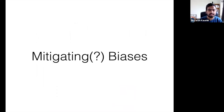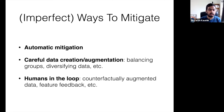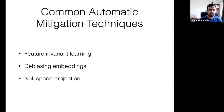In the last part, we discussed how to detect some of these biases. But once you've detected them, can we do something to mitigate them? There are some ways people have looked at this, including automatic mitigation methods, but also data creation and augmentation strategies like balancing demographic groups in the training corpus, or using humans in the loop to counterfactually edit data. All of these methods are imperfect in nature, so proceed with caution. Common automatic techniques include feature invariant learning, debiasing embeddings, and null space projections.